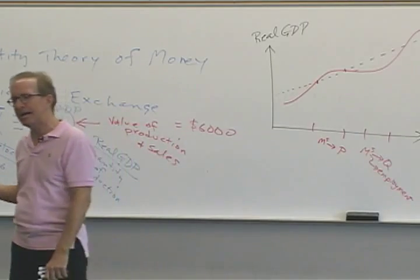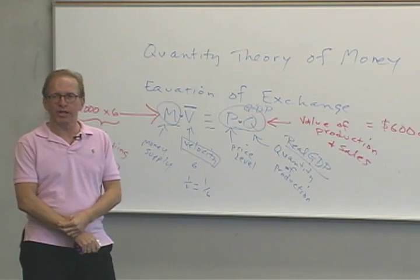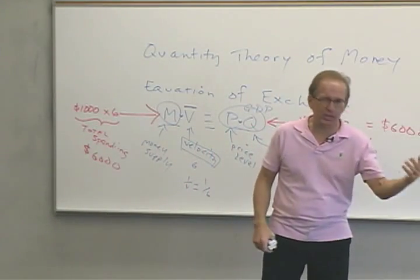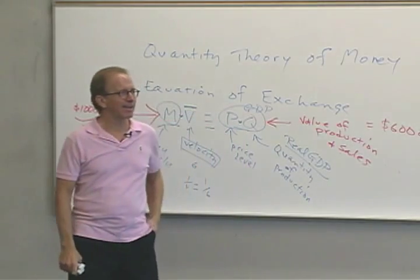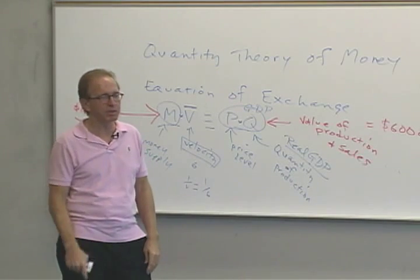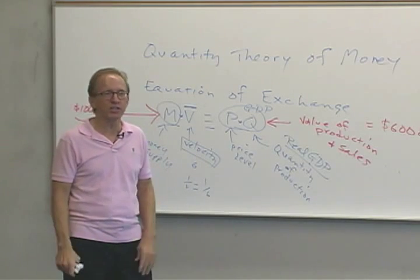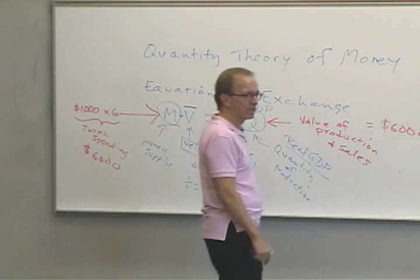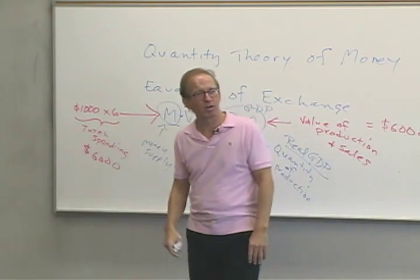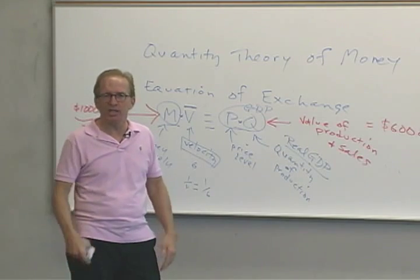Unstable interest rates interfere with economic planning. If you're thinking about buying a house and the bank says 6%, then two days later they say 6.5%, you might not know if you can afford it anymore — that could push your house payments up $100 a month. If the next time you call it's 5.5%, interest rates are just all over the place.